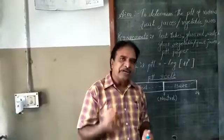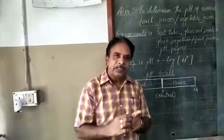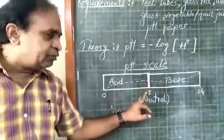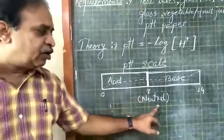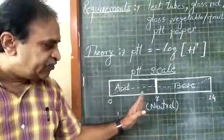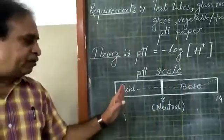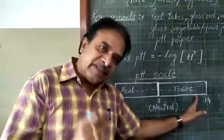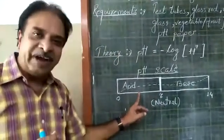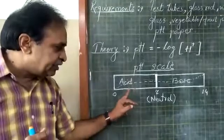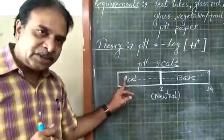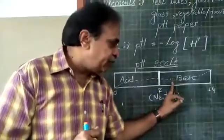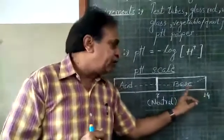About the pH scale: the pH scale has limits from 0 to 14. If the pH of any substance is exactly 7, we call it neutral. If pH is less than 7, it is acidic in nature, and if it is more than 7, it is basic in nature. Further classification: pH less than 3.5 is a strong acid; 3.5 to 7 is a weak acid; 7 to 10.5 is a weak base; and 10.5 to 14 is a strong base.